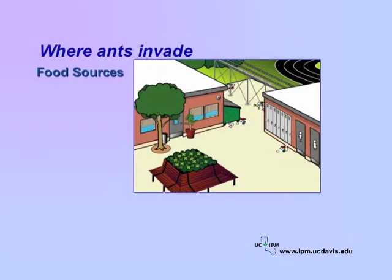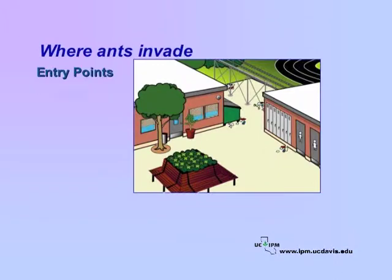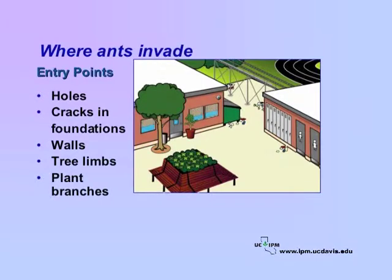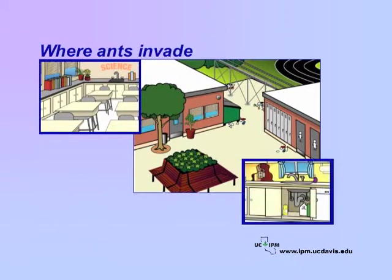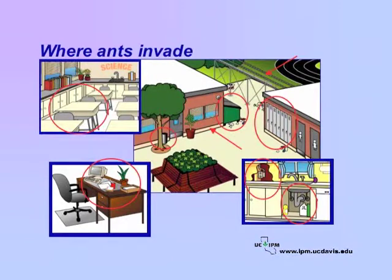You can find ants wherever there is an attractive food source. Ants flock to honeydew-laden plants, garbage, other discarded food, and areas of moisture near buildings. Look for entry points to buildings such as holes or cracks in foundations and walls, or tree limbs and plant branches that touch buildings. Ants may invade classrooms, lounges, kitchens, and other food storage areas, bathrooms, and offices. They may travel over and under desks, under sinks and other water sources, around pipes or electrical wires, in lockers, near dumpsters and garbage cans, under bleachers, and around concrete slabs. Colonies often nest in planter boxes, raised planting beds, or potted plants, and travel up trees for honeydew.